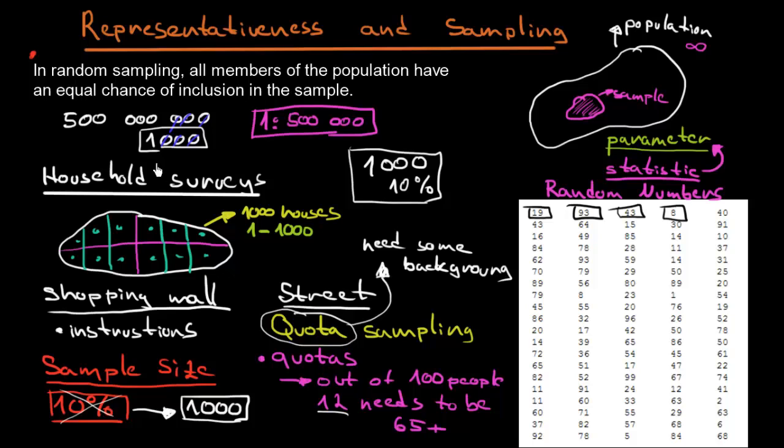So what is important to remember from this video? The basic rule of representativeness is that every member of the population should have an equal chance of inclusion in the sample. Then, just imagine what is the population and what is the sample, that there is some parameter we would like to get close to. And we would like to get close to it thanks to that we really create some representative sampling. Maybe using the random numbers, we can also use quota sampling, but we need some background information. And we also need to have some sample size, let's say 1,000 people.